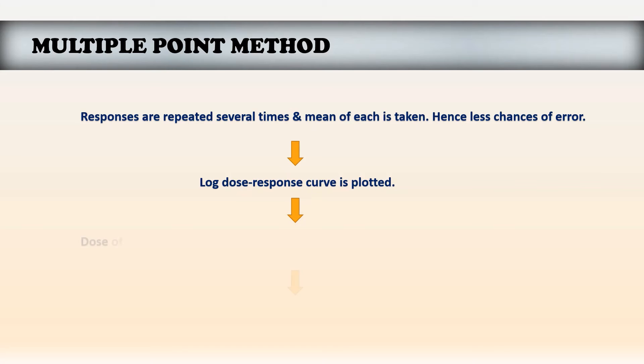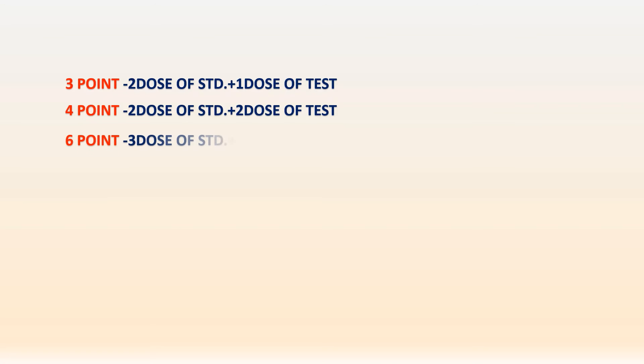Now let's have a look at multiple point method. The responses are repeated several times and the mean of each is taken. Thus chances of errors are minimized in this method. In 3 point method 2 doses of the standard and 1 dose of the test are used. Whereas in 4 point method 2 doses of standard and 2 doses of test. In 6 point method 3 doses of standard and 3 doses of test are used. Similarly we can also design 8 point method using 4 doses of standard and 4 doses of test.